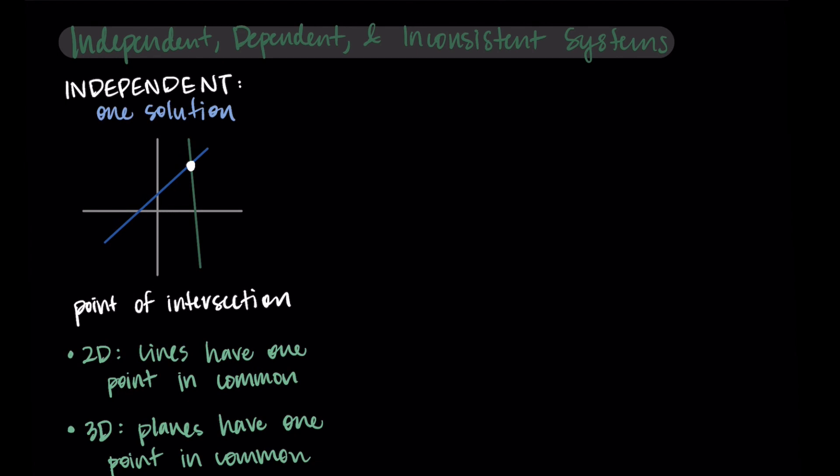Then the next two types of systems, dependent and inconsistent, we haven't seen examples of these yet, but let me just talk about what they look like. So a dependent system of linear equations is going to have infinitely many solutions. So for dependent systems, I like to think of this as a line of intersection.